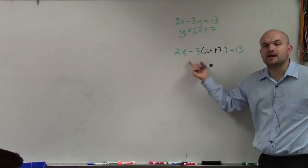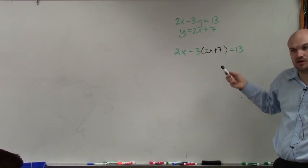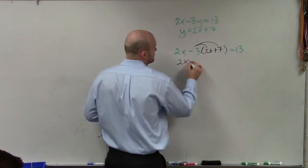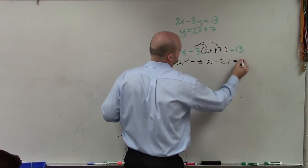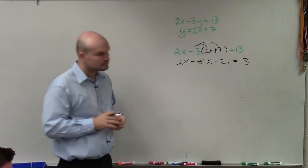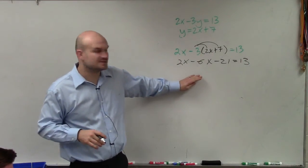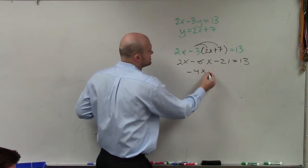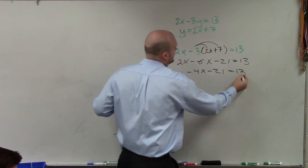So I'm going to apply distributive property, combine my like terms, which is 2x minus 6x is going to be negative 4x minus 21 equals 13.